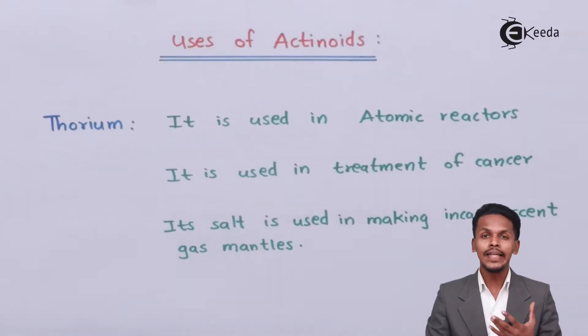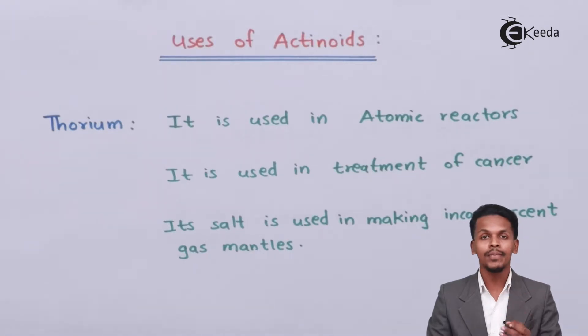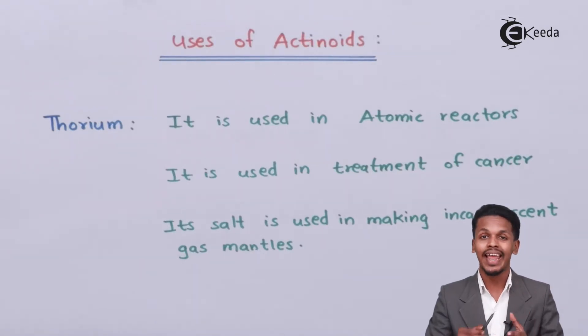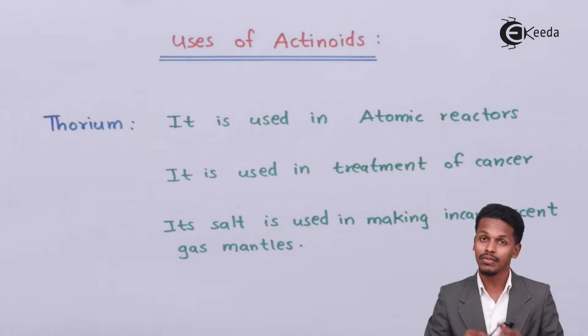So friends, out of the actinoids, only thorium, uranium and plutonium are basically widely used, and that's the reason I am going to talk about the uses of these elements only.